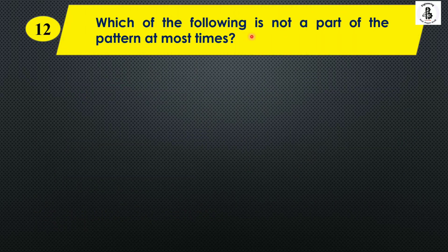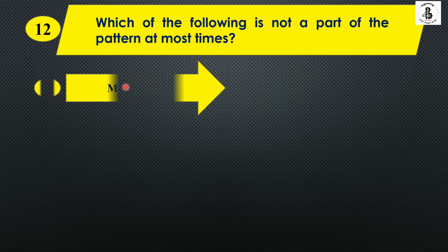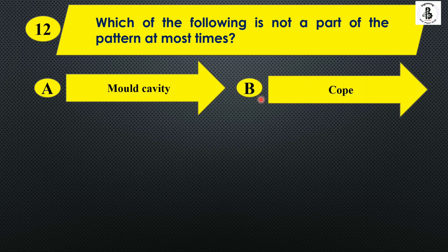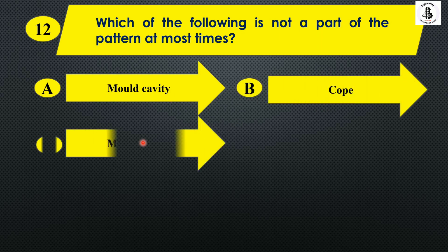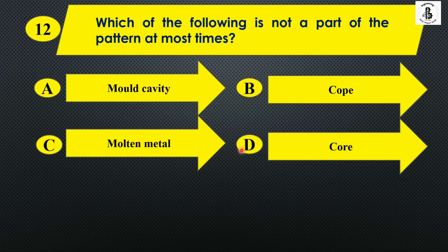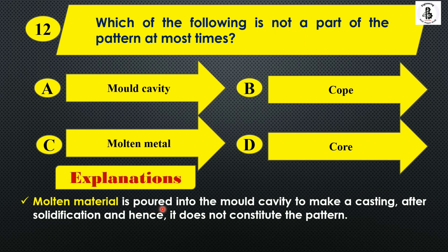Which of the following is not a part of the pattern at most times? Option A: mold cavity, Option B: cope, Option C: molten metal, and Option D: core. The molten material is poured into the mold cavity to make a casting, and after solidification it does not constitute the pattern and would not be a part of it. So the right answer is Option C, molten metal.